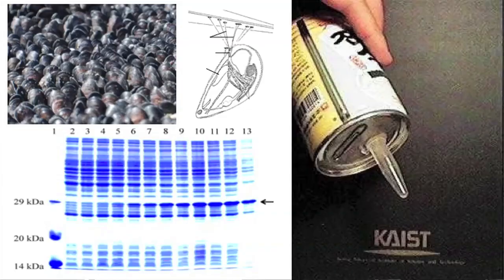You can use a high-productivity system to produce something such as this one. That is mussel glue protein, which can be used as a water-resistant super-adhesive. Now you can clone this gene into E. coli.